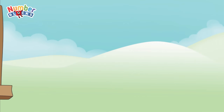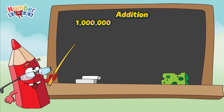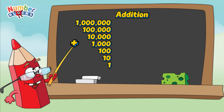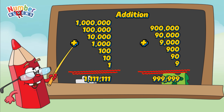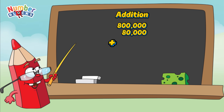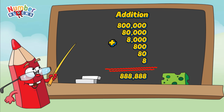Let's do a recap. Let's learn addition. One million plus one hundred thousand plus ten thousand plus one thousand plus one hundred plus ten plus one equals one million one hundred eleven thousand one hundred eleven. Nine hundred thousand plus ninety thousand plus nine thousand plus nine hundred plus ninety plus nine equals nine hundred ninety-nine thousand nine hundred ninety-nine. Eight hundred thousand plus eighty thousand plus eight thousand plus eight hundred plus eighty plus eight equals eight hundred eighty-eight thousand eight hundred eighty-eight.